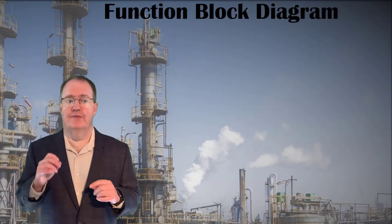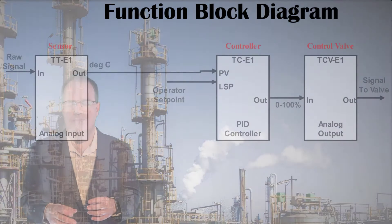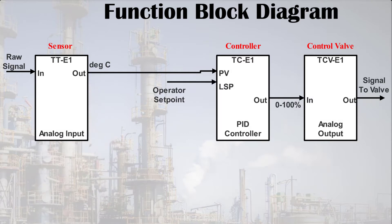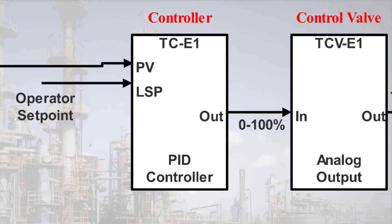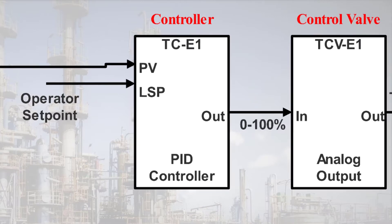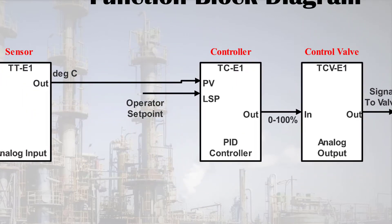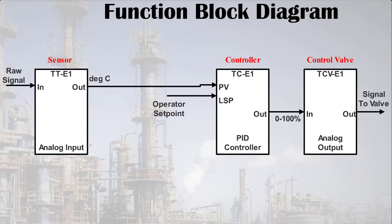At this point, let's introduce the function block diagram, or FBD. FBDs represent the elements of a control loop — such as sensors, valves, and controllers — with rectangles called function blocks. Each function block exists in the control system and carries out one task. Inputs to a function block are on the left, and outputs are on the right. The lines connecting the blocks represent signals, which we often label with their units. FBDs are a useful visual tool, and continuous controls on most programmable logic controllers or distributed control systems are configured using interactive FBD displays, so you'll see FBDs in the workplace.